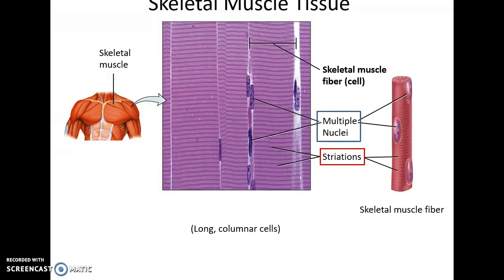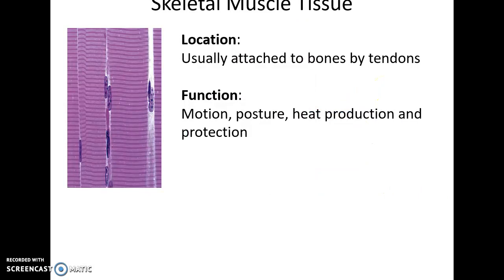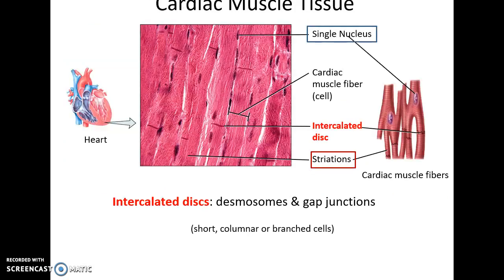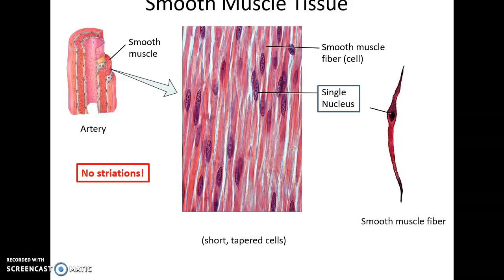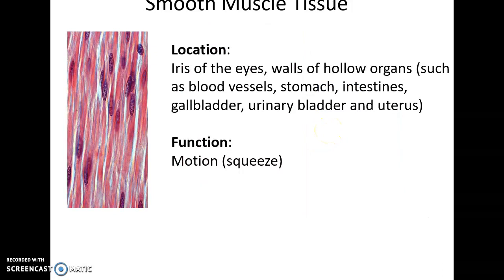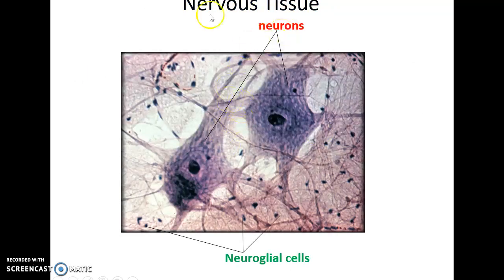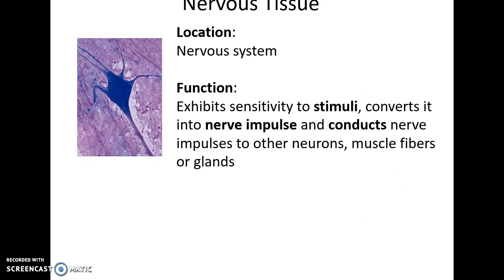Muscular tissue comes in three types. Skeletal muscle tissue consists of long cells with visible striations and often multiple nuclei, found in muscles and responsible for posture and heat production. Cardiac muscle tissue, found in the heart, also has striations but the cells are shorter with one nucleus, and have intercalated discs connecting cells together — it pumps blood. Smooth muscle tissue is found in many hollow organs; these cells are small, tapered, and lack striations, with one nucleus. Found in the iris, blood vessels, stomach, and intestines, smooth muscle primarily helps move things along. The nervous system has large neurons and tiny neuroglial cells scattered around them. Nervous tissue is found in the nervous system and functions to detect stimuli, convert them into nerve impulses, process them, send them to various areas, and control muscle fibers and glands. And that covers the tissues of the body.